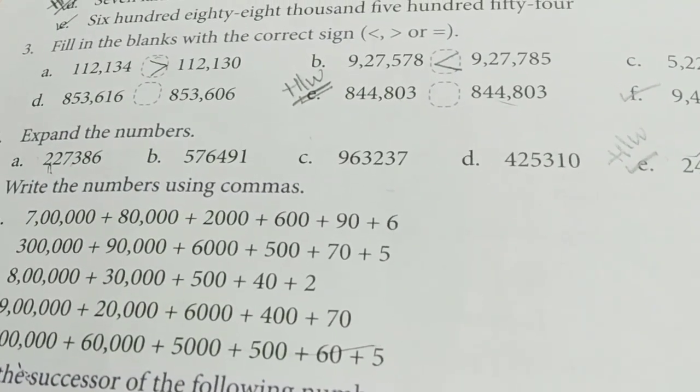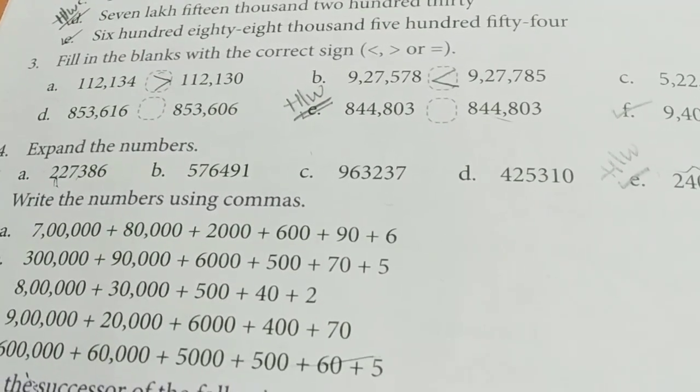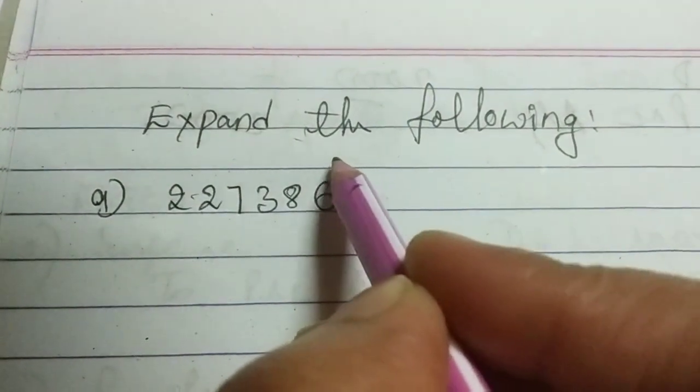2,27,386. We saw that in the notebook. Before expanding the given number, you have to put the columns.